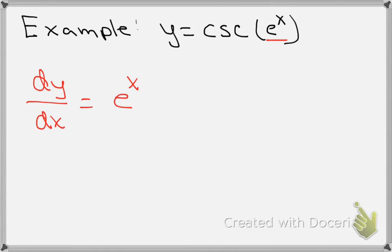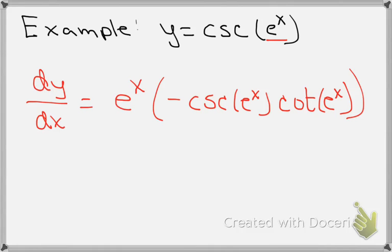Now I need to multiply by the derivative of cosecant. Remember, the derivative of cosecant is minus cosecant cotangent. Notice that the arguments of those trig functions is still e to the x. That has not changed.